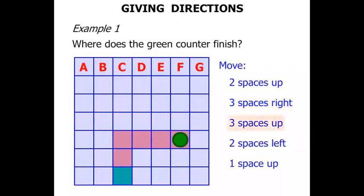Then three spaces up. One, two, three. Then two spaces to the left. One, two. And finally one space up. There we go. So the counter has finished at point D. Terrific.